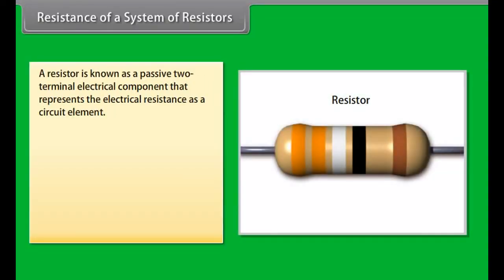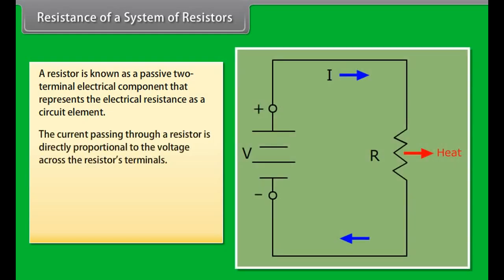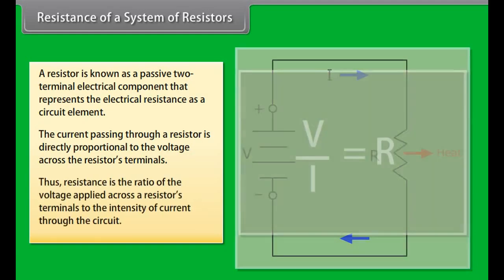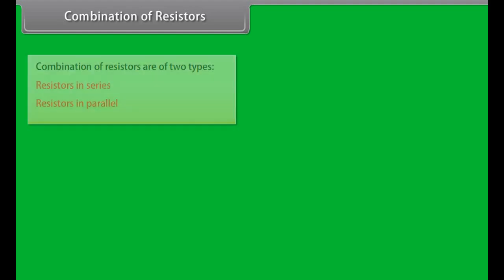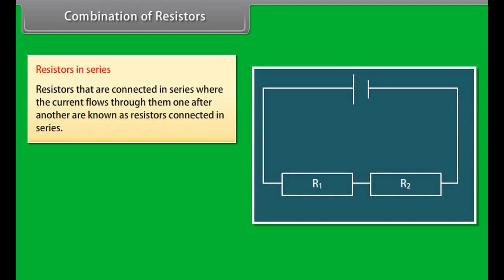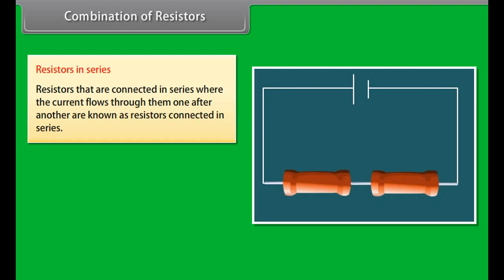Length: the length of a conductor is similar to the length of a hallway — a shorter hallway allows movement at a higher rate than a longer one. Temperature: temperature has a significant effect on resistance. The higher the temperature, the higher the resistance. For example, when you turn on a light bulb, the wire is initially cold with low resistance, but as it heats up it gives off light and resistance increases. Note: doubling the length of a wire doubles its resistance, whereas doubling the cross-sectional area cuts the resistance in half.